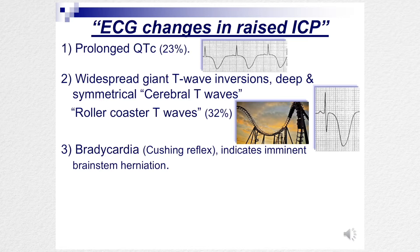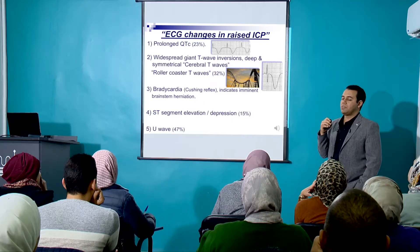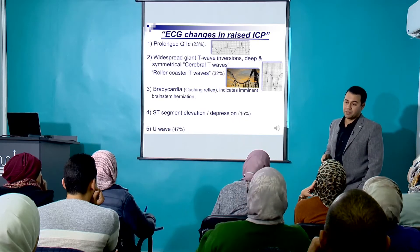You get bradycardia as part of the Cushing reflex — bradycardia, hypertension, and irregular breathing — which is a peri-herniation sign. You also get ST elevation and depression, and U-waves. These are the ECG changes in a patient presenting with raised intracranial pressure.